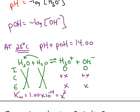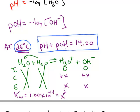And at 25 degrees, and only at 25 degrees, the pH and the pOH are equal to 14 when you sum them together.